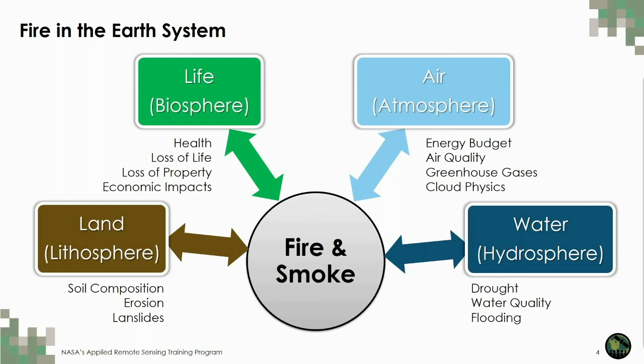In the hydrosphere, the onset of drought conditions can lead to increases in fire activity. Heavy rains after a fire can accelerate soil erosion, which transports soil, ash, and other debris to streams and rivers, degrading water quality. In extreme cases, these sudden losses of vegetation and erosion can lead to flooding and landslides.